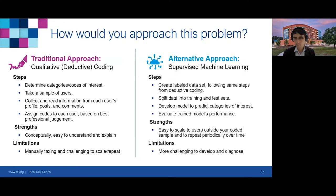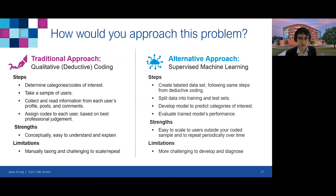An alternative approach to audience segmentation is supervised machine learning. The first step is to create a labeled dataset by going through the deductive coding exercise. With this labeled data, we split it into a training and a test set — using the training data to develop a model to predict categories of interest, and on the test set evaluating the trained model's performance on new data it hasn't seen before. The strengths are that, assuming your model is accurate enough, it's relatively easier to scale to users outside your coded sample and repeat over time, though there's a trade-off in complexity.